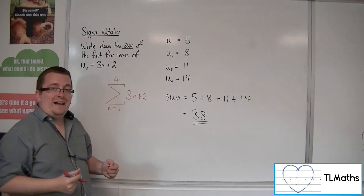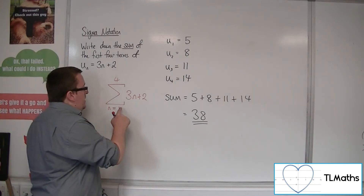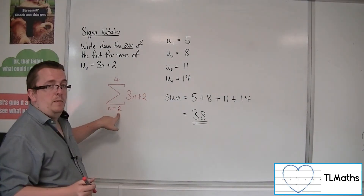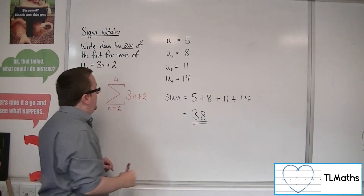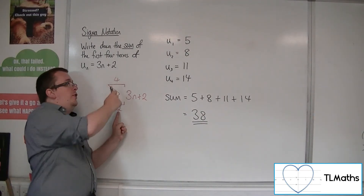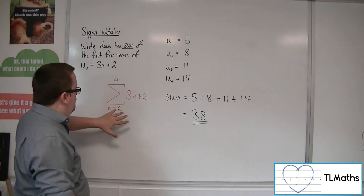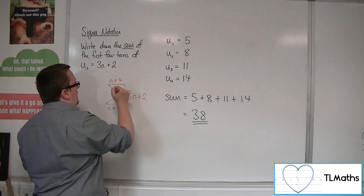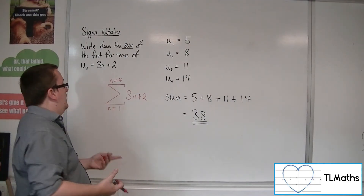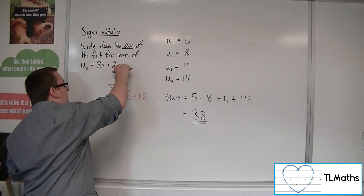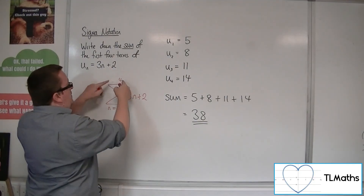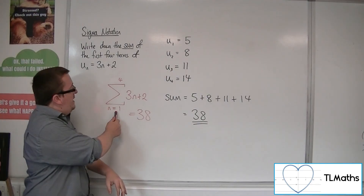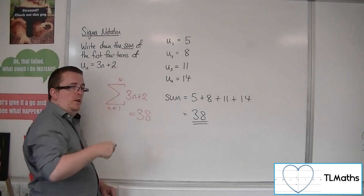And add them all together up until I reach the fourth term, and I just write the number 4 at the top. Now if I'd written 2 at the bottom instead, that would be saying add up all of the terms from the second term to the fourth term, so that would have just been 8 plus 11 plus 14. This doesn't mean start at 2 and find the next four terms — it means from n is 2 up to n is 4. So the notation is telling us to substitute in n is 1, n is 2, n is 3, n is 4, and then add them all together. And this is equal to 38.